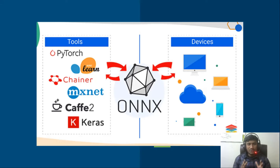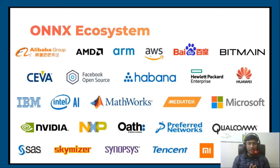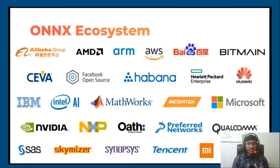ONNX first came to market in 2017, founded by three companies: AWS, Microsoft, and Facebook. As it gained popularity, multiple other companies joined and started contributing to the ONNX ecosystem, including IBM, Intel, NVIDIA, Huawei, and many more who are now dedicated contributors.